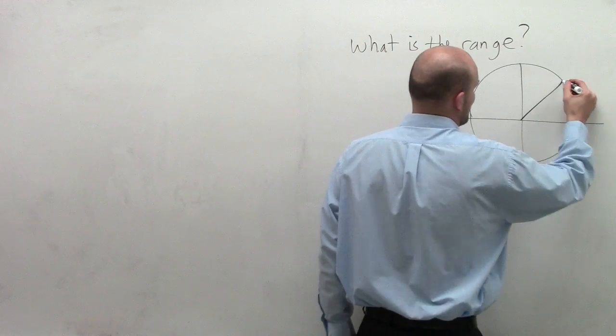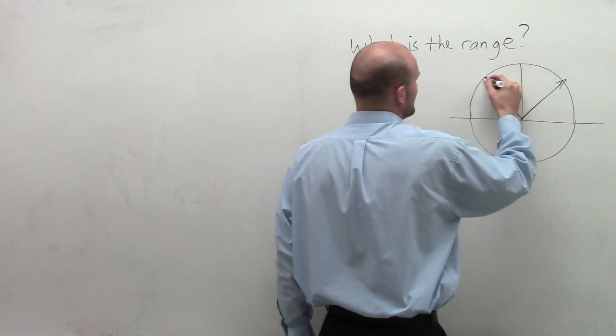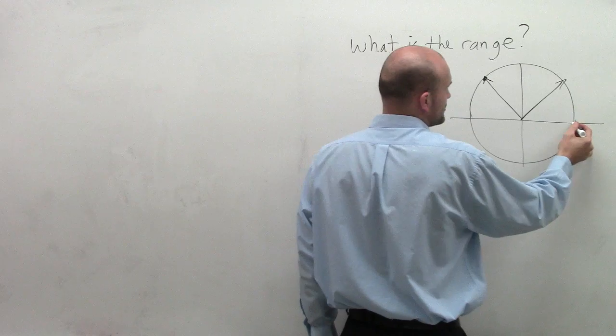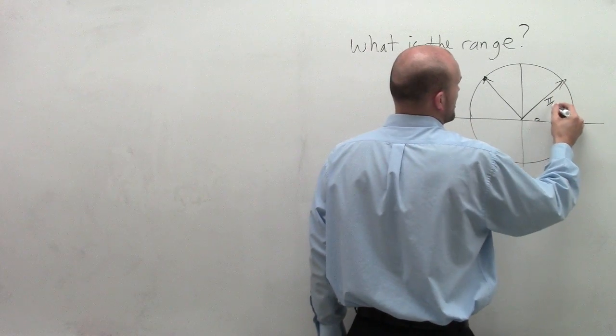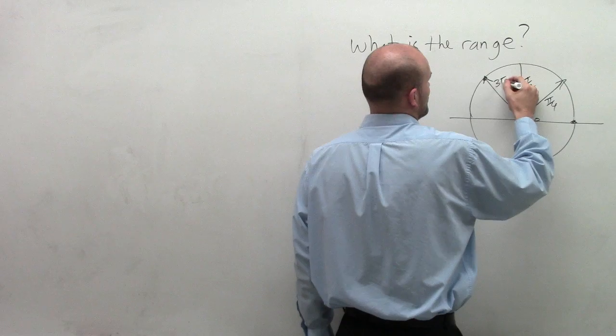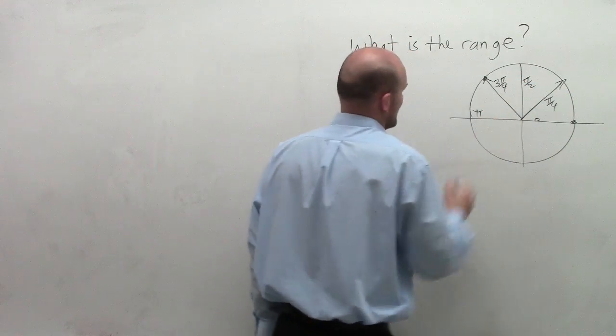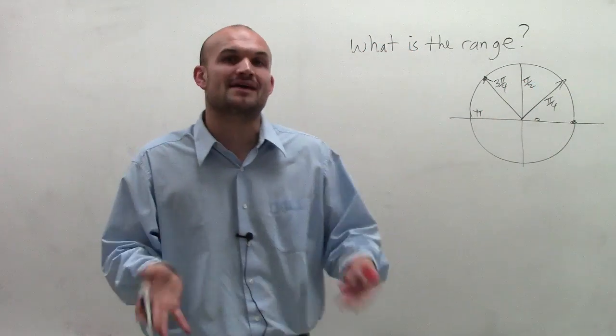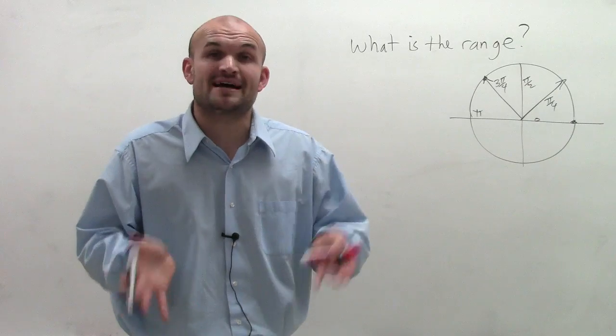Our input values were what we call our angles that we used. We used our angle 0, pi over 4, pi halves, 3 pi over 4, and pi. And we plugged those values into our graphs of sine and cosine to be able to find the output value.